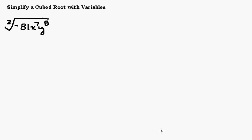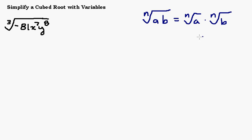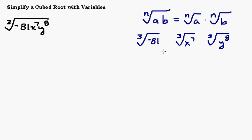In this video we're going to look at simplifying a cubed root that has not only a number underneath the cubed root but also some variables. When you're looking at this you want to remember the rule that if you have a root of two things that are multiplied together, that's the same as the root of the first one times the root of the second one. This tells us that we can look at each part individually.